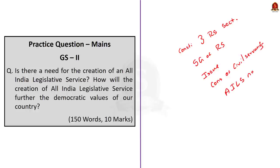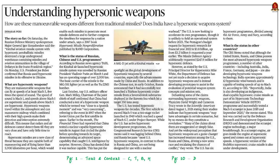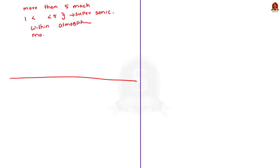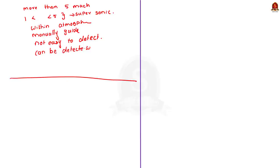Now let us take up the next news article, which talks about hypersonic weapons. Hypersonic weapons are maneuverable weapons that can fly at speeds of at least Mach 5 — that is, five times the speed of sound. Objects traveling between Mach 1 and Mach 5 are called supersonic. Hypersonic weapons travel within the atmosphere and can be maneuvered, i.e., manually directed midway. Since they travel at such high speeds, they are not easy to detect and can only be detected when very close, leaving the other side no time to react.